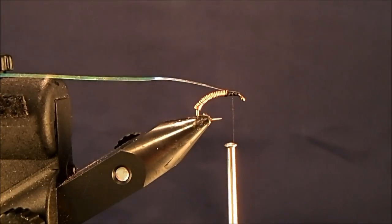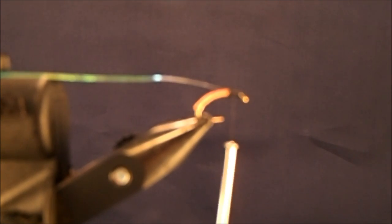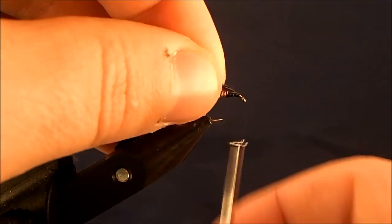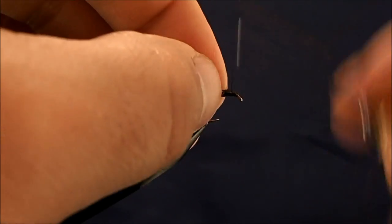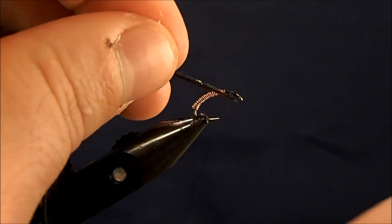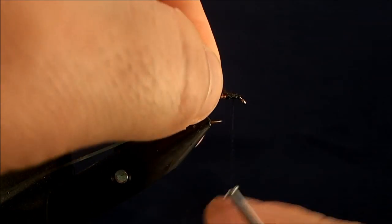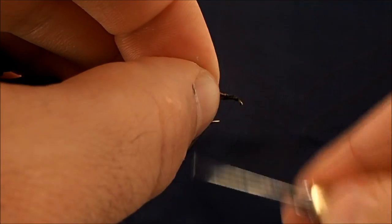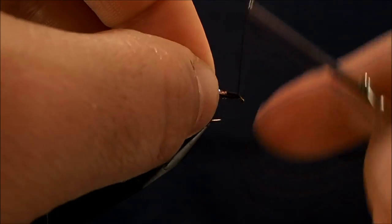And then, just like a brassy, I'm going to take a strand of peacock herl. I'm going to trim the end and tie that in. And it's important to note there's two sides to peacock herl. There's that flat side, and then there's the shiny side. You want to make sure that you're tying that flat side down.